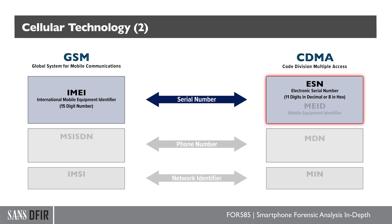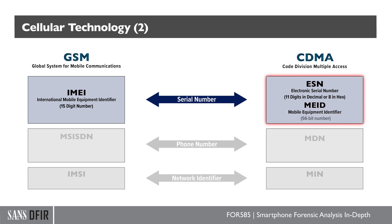Some settings will translate and decode both, showing you decimal and hex. For MEID, this is the Mobile Equipment ID and it replaced ESN. This is a 56-bit number that is available on CDMA handsets.